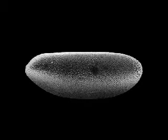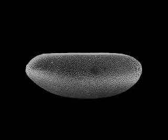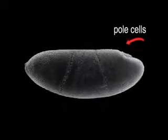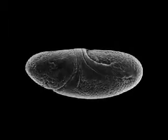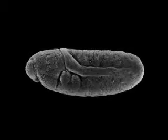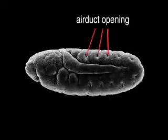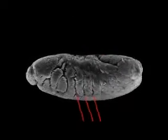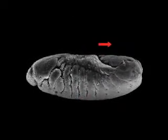We can appreciate the complexity of these events by morphing a series of individual scanning electron micrographs into a continuous temporal sequence. Migration of pole cells, development of various surface indentations, including openings to the air ducts or tracheal tubes, segmentation, and tail retraction.